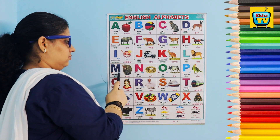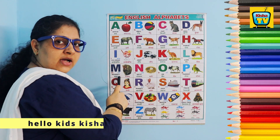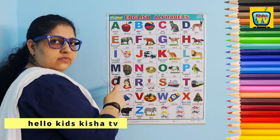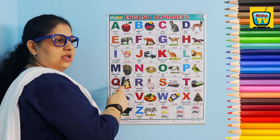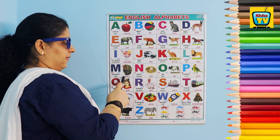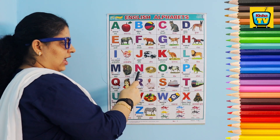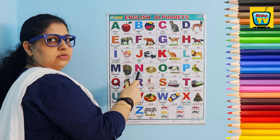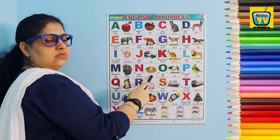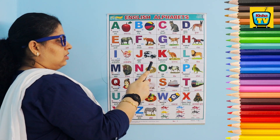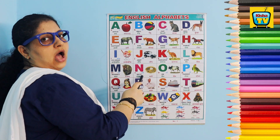M for monkey. Monkey means bandar. N for nest. Nest means ghonsla.